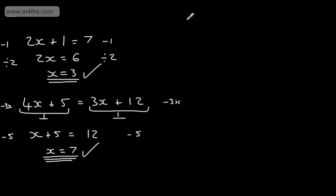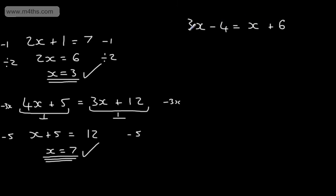Let's look at another example. Let's say we have 3x minus 4 is equal to x plus 6. I can see I've got 3x on the left-hand side and 1x on the right-hand side. So what I'm going to do is subtract 1x from both sides of the equation — I can see I've got more x's on the left-hand side. Subtracting 1x is going to leave me 2 lots of x, minus 4 is equal to 6.